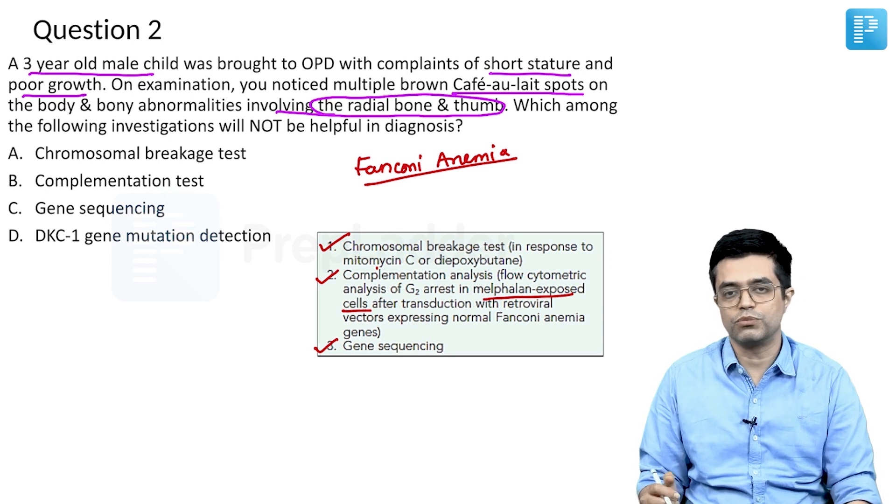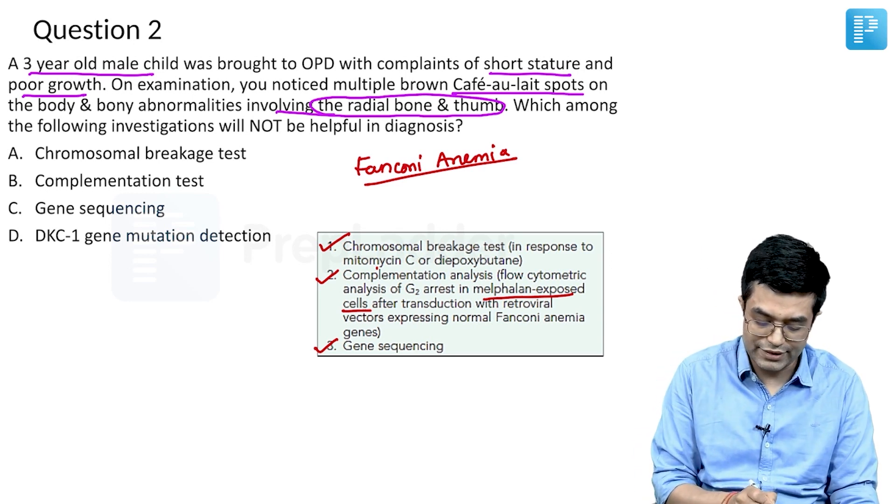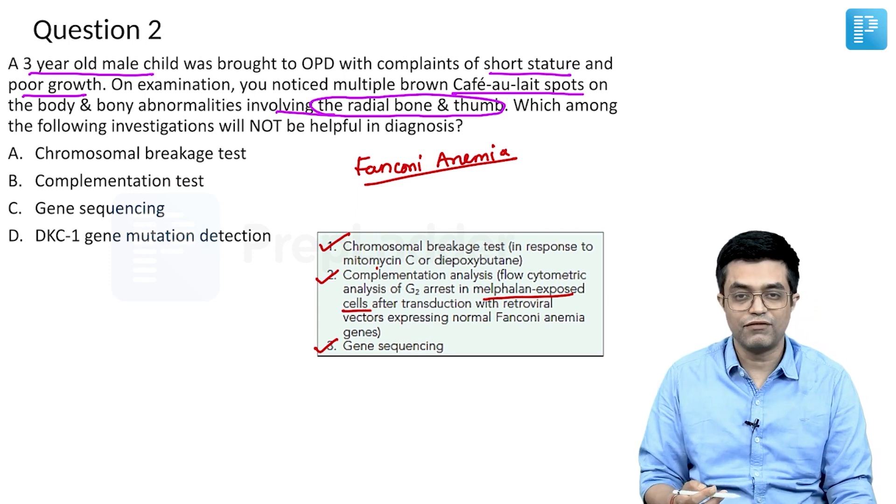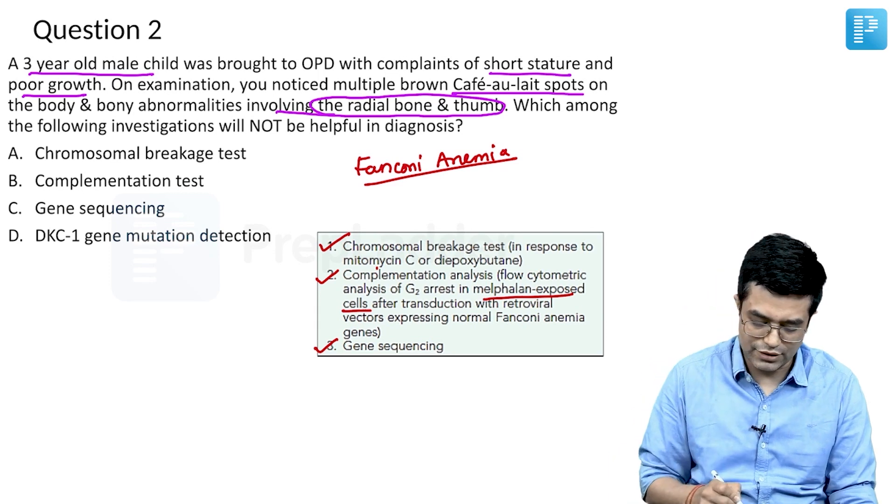What is the odd one out? The D option: DKC1 gene mutation detection is done for dyskeratosis congenita which is not being suspected. So by exclusion, the answer to this question is D.